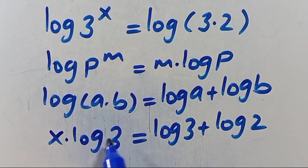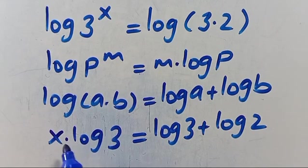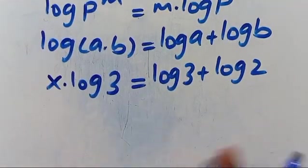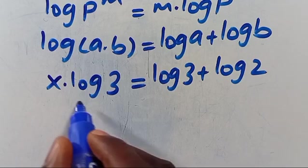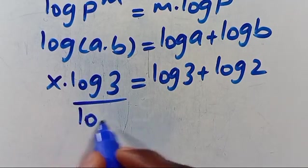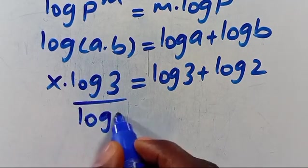Then we divide both sides by log 3 in order to get the possible value of X.